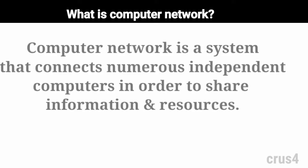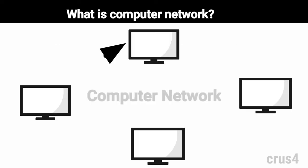A computer network is a system that connects numerous independent computers in order to share information and resources. The integration of computers and other different devices allows users to communicate more easily. A network connection can be established using either cable or wireless media. Hardware and software are used to connect computers and tools in any network. So this is what computer network is in brief.